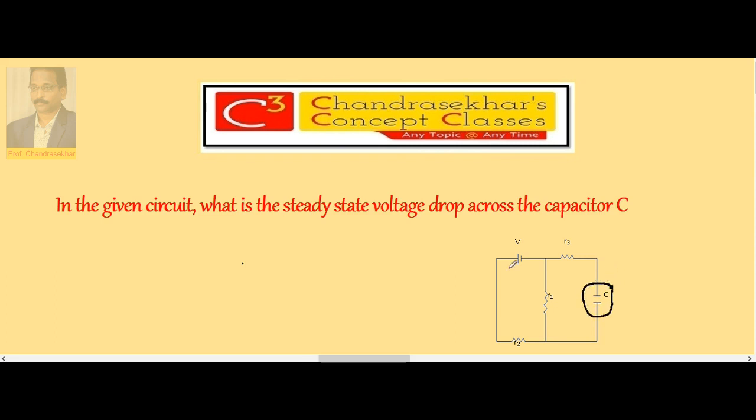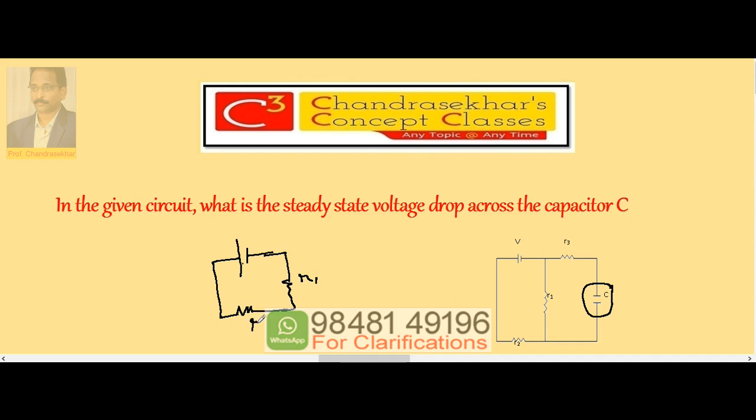consider this branch. Now the equivalent circuit becomes: this is R1, this is R2, voltage is V, and this is